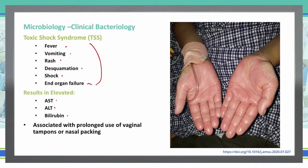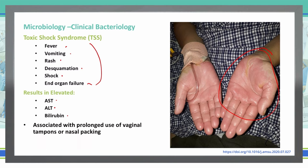What is toxic shock syndrome most commonly associated with? It's associated with the prolonged use of vaginal tampons or nasal packing — using them for too long, not taking them out and replacing them, can cause toxic shock syndrome. As you can see in this picture, this patient's hands have undergone desquamation, where they are losing or sloughing off that cell layer due to toxic shock syndrome.